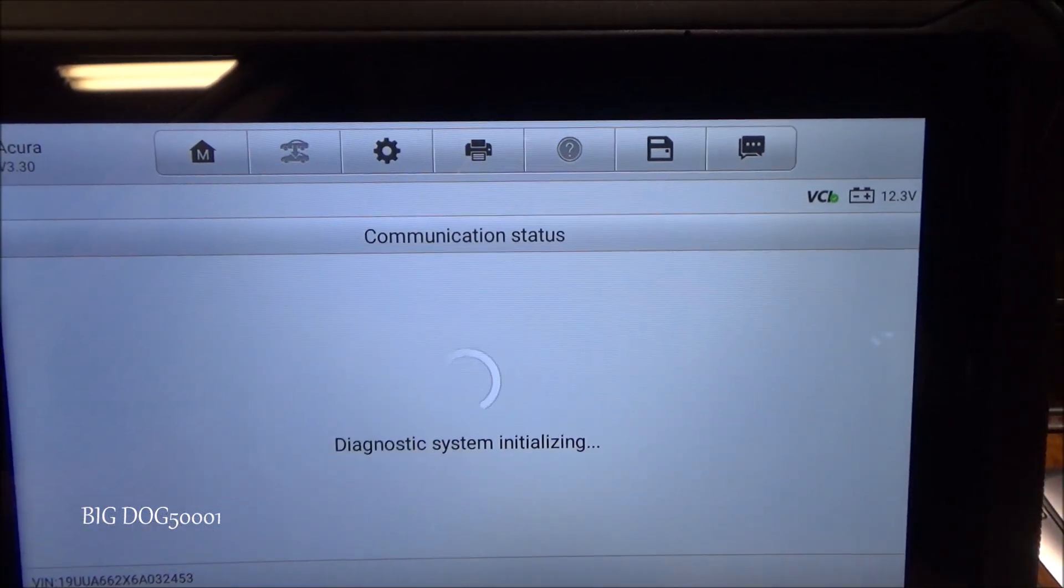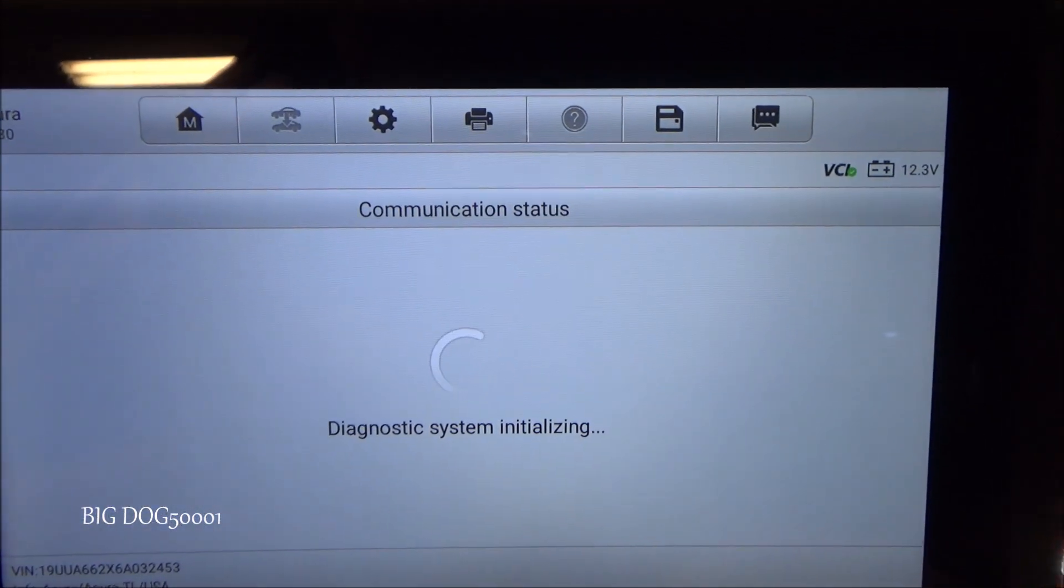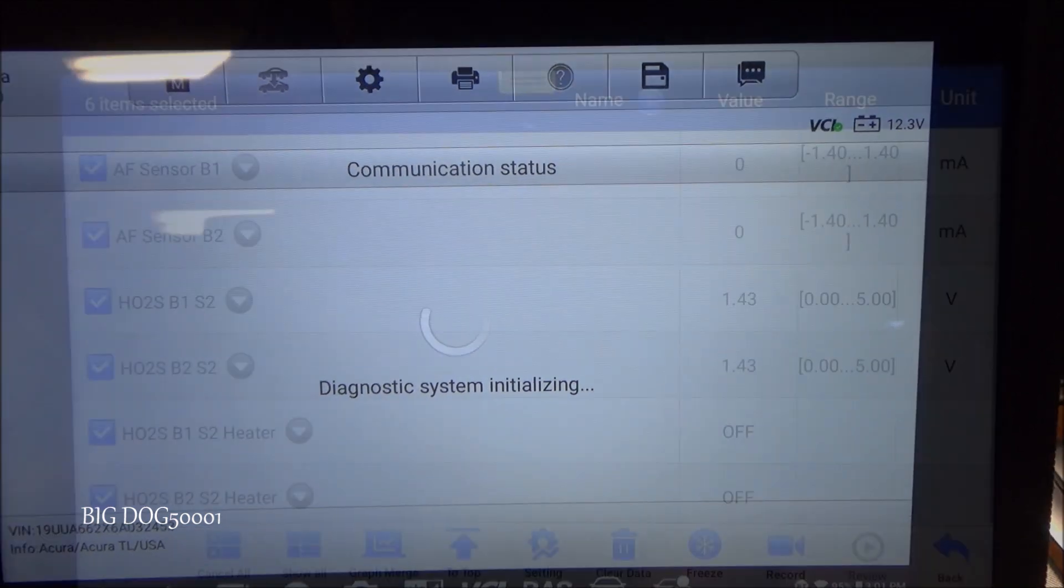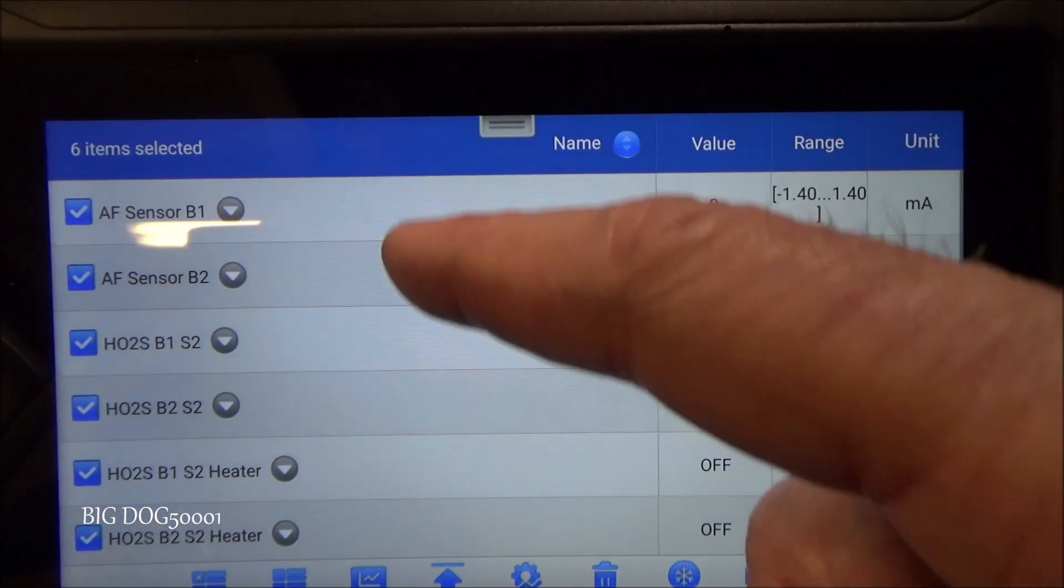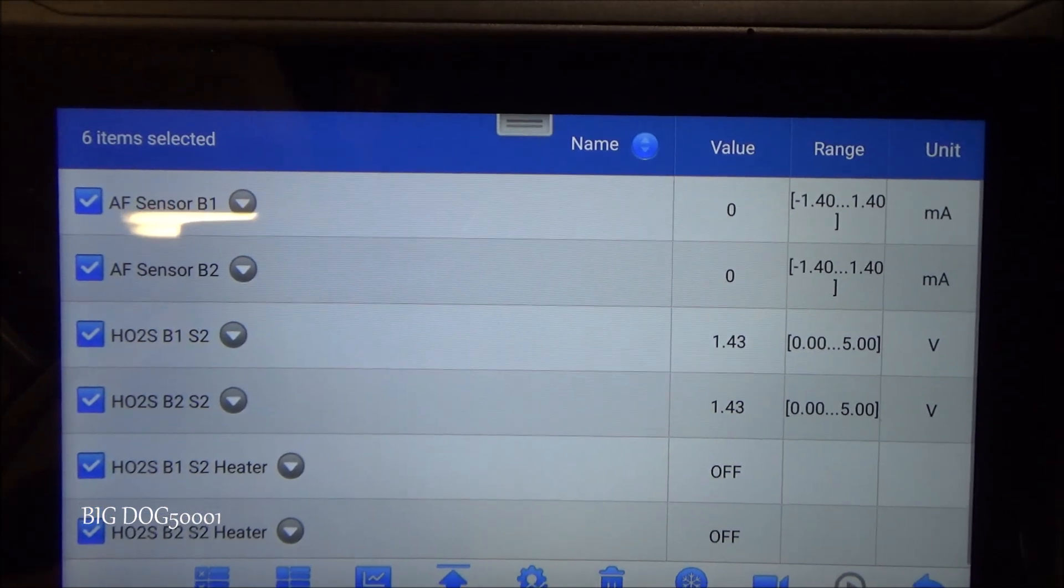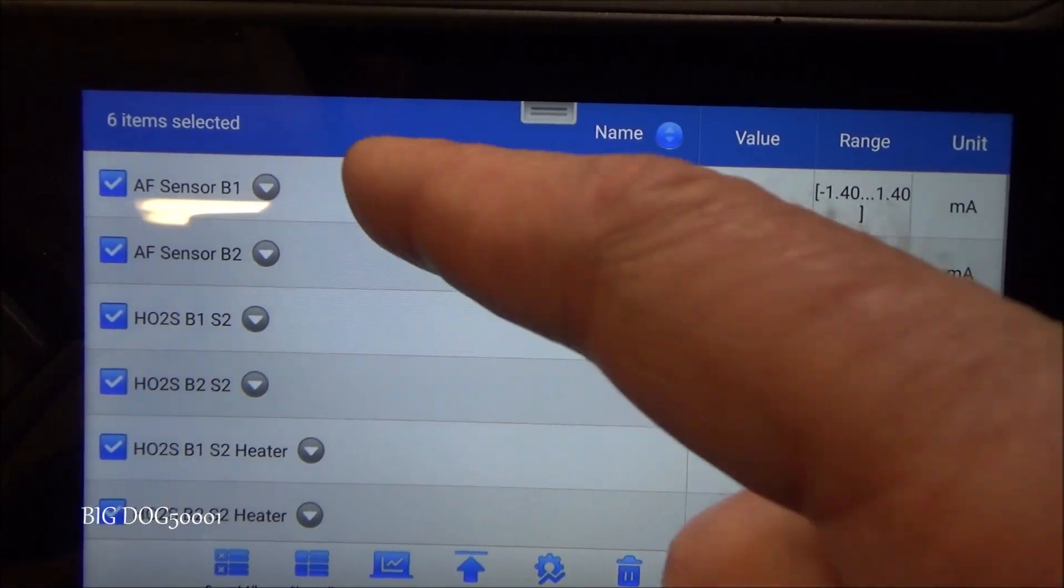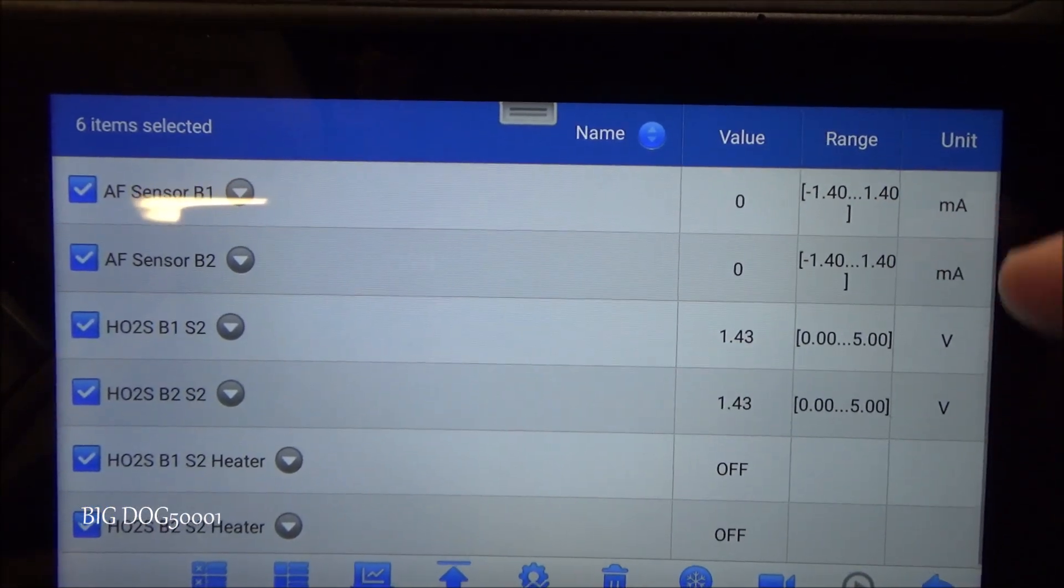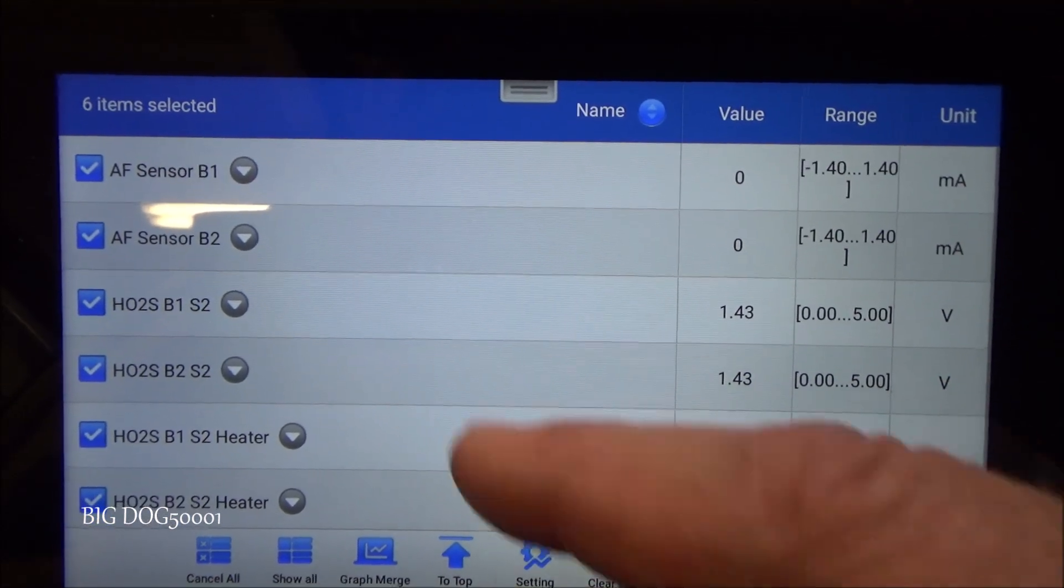Now we'll just go into the engine computer and I'll bring up some live data that I think might help. Alright I pulled up some data pids that I want to check out. These top two data pids are going to be our AFR or air fuel ratio sensors, Bank 1 and Bank 2. Those run in milliamps. We're not too concerned with them but I do want to see that they're working.